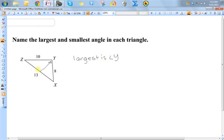If I want to find the smallest one, I need to find the angle across from the smallest side. The smallest side is 8, so the smallest is angle z.